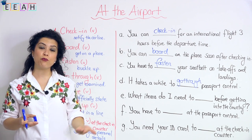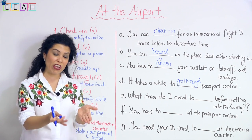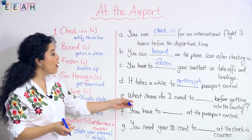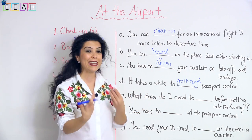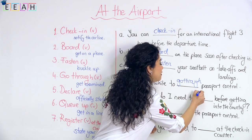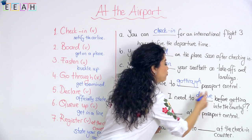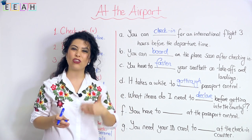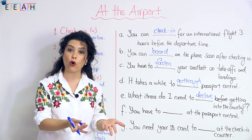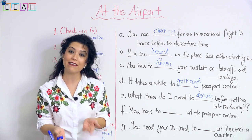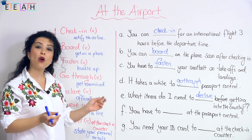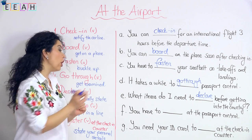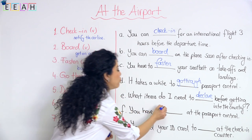'To declare' means to officially state what you have brought into the country — to say that you have brought in these goods. For example: what items do I need to declare? I should let the officials know what I have with me. Next: 'to queue up' means to get in a line. You have to queue up or get in a line at passport control and wait for your turn.